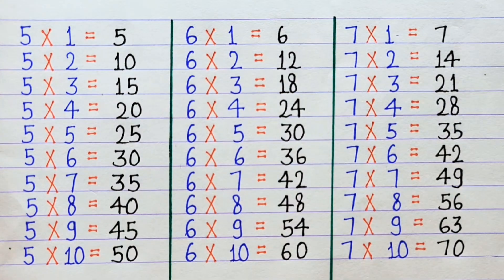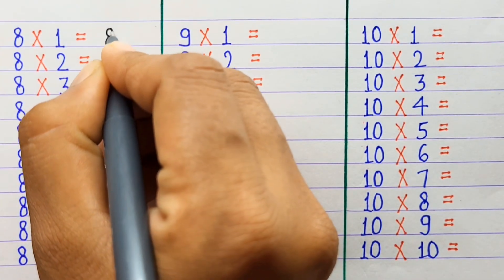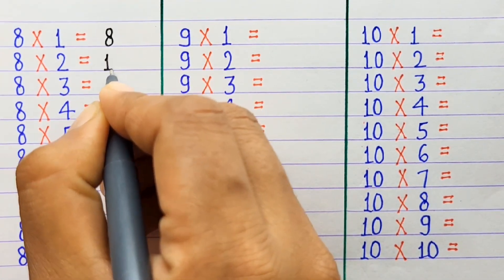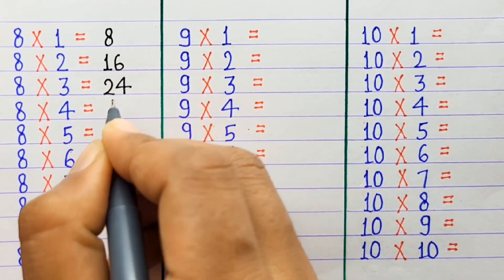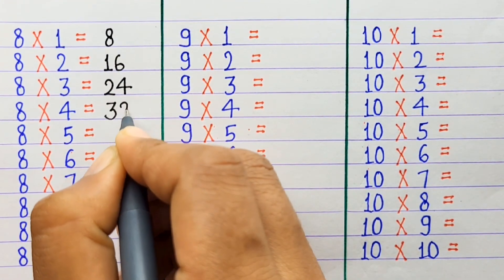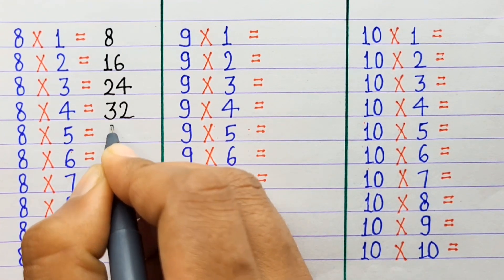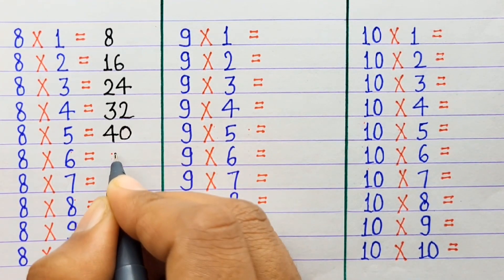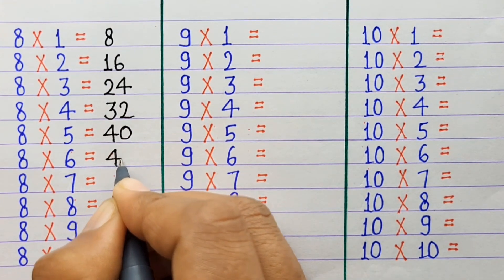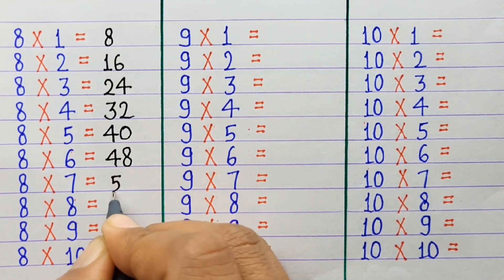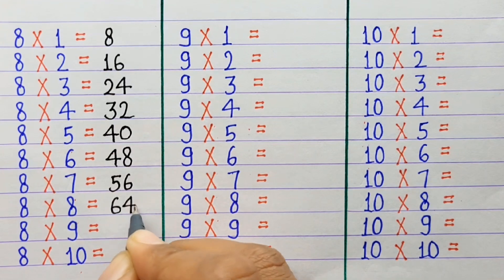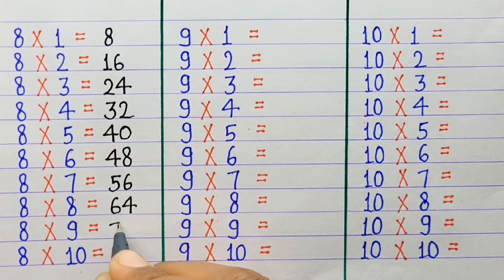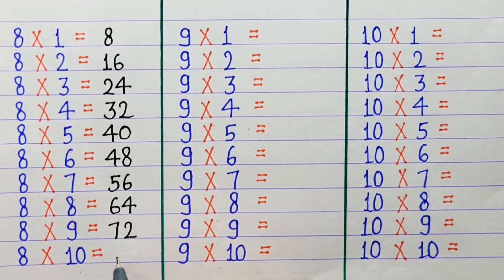8×1=8, 8×2=16, 8×3=24, 8×4=32, 8×5=40, 8×6=48, 8×7=56, 8×8=64, 8×9=72, 8×10=80.